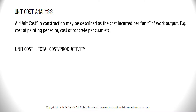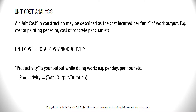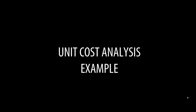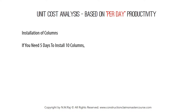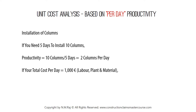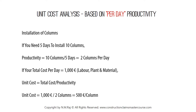Productivity is your output while doing work — for example, per day, per hour, etc. Productivity may also be expressed as a formula: it is equal to total output divided by duration. For example, consider the installation of columns. Let's assume that we need 5 days to install 10 columns, so your productivity is equal to 10 columns divided by 5 days, giving us 2 columns per day. If your total cost per day is equal to 1,000 euros, your unit cost is equal to 1,000 euros divided by 2 columns, giving you 500 euros per column. This is based on a per day productivity.